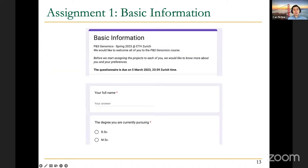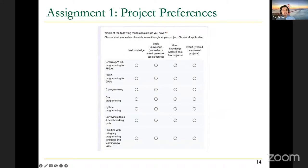We already have some assignments. The first assignment, which you should already know about, is about basic information about yourself. There's a Google Forms — you can provide basic information about yourself and your skills, like programming skills or other types of skills, so that we can assign projects to you better based on your skills and interests. If you haven't done this yet, please complete the Google Forms before next week's lecture.